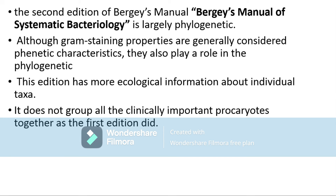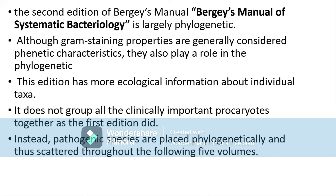Since the second edition is based on phylogenetic classification, it contains more ecological information about individual taxa. Unlike the first edition where all clinically important organisms were grouped together, in the second edition all organisms are placed according to phylogenetic analysis, so clinically important species are now scattered across different groups.